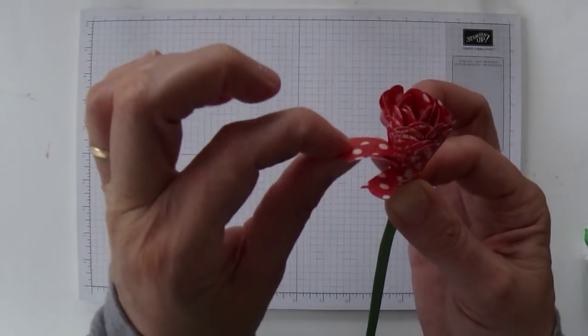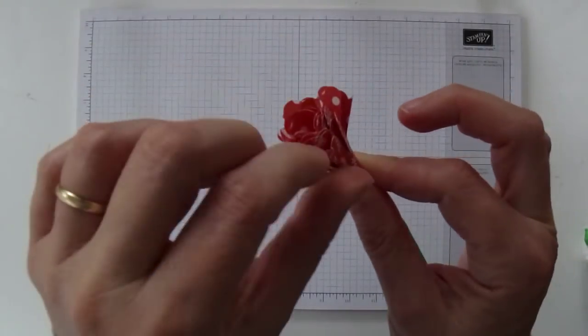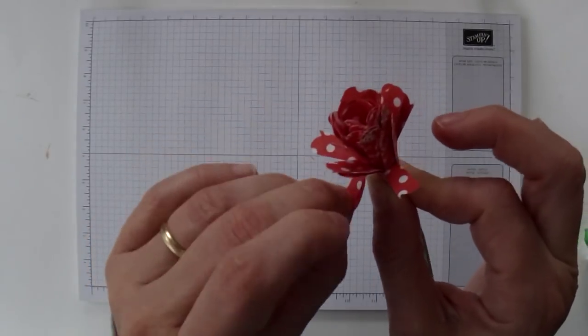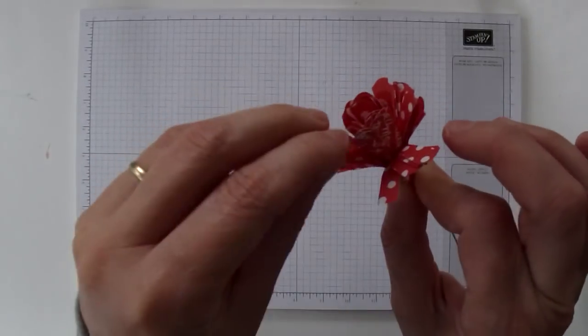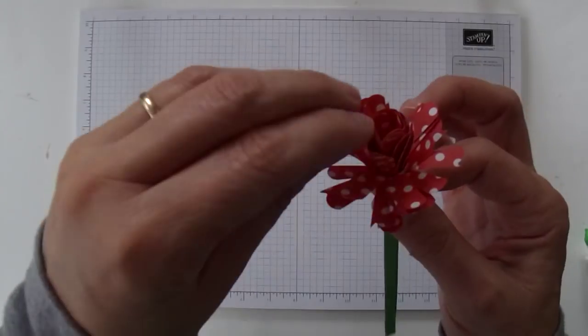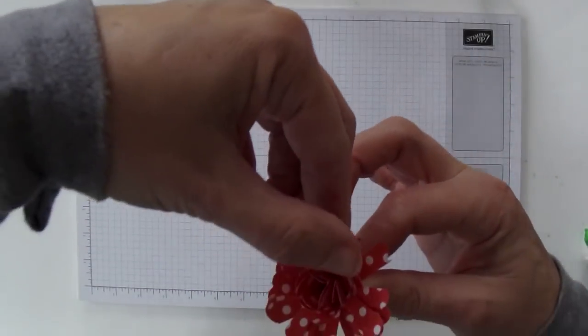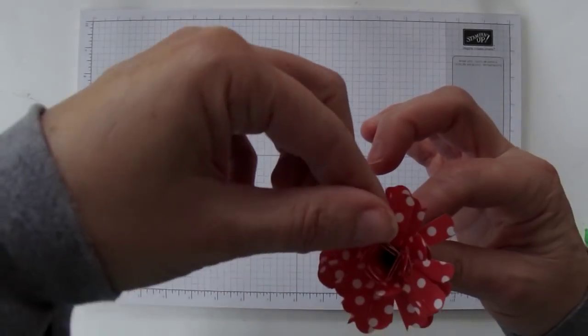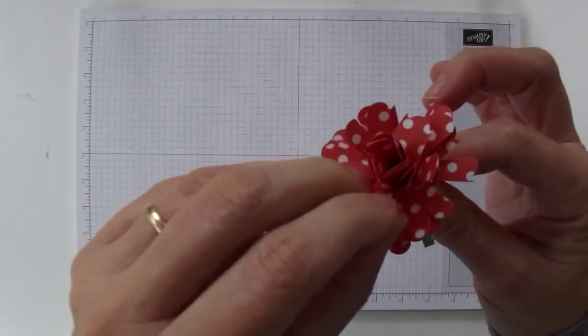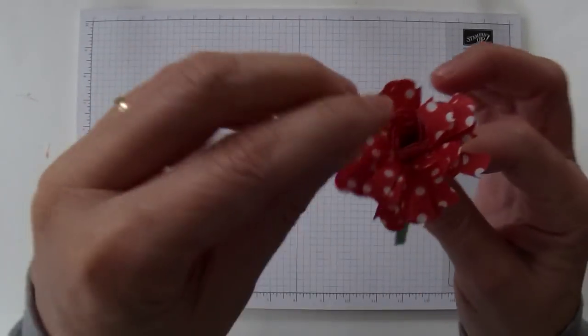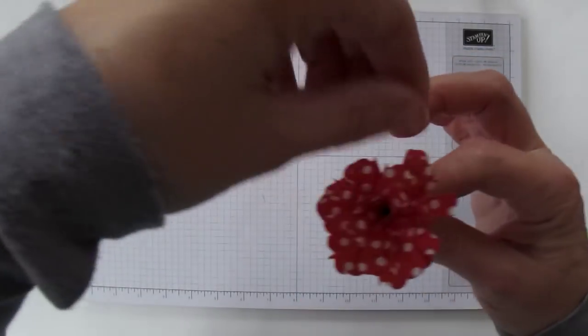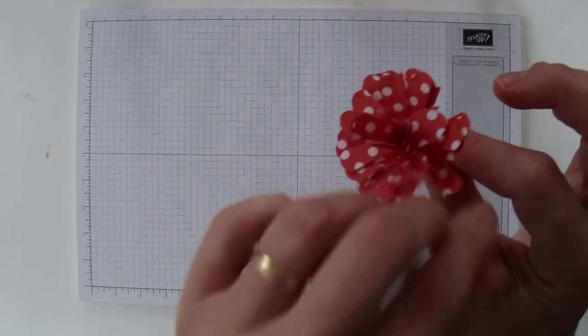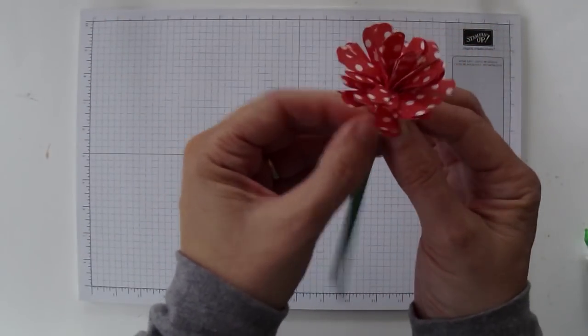And then what I'm going to do is just start bringing down my petals from the outer to the inner, just like that. Just start to open up the flower. This flower is like a whimsical flower. It's not really meant to look like any particular flower, although I do think it looks a little bit like a carnation. But it's just a happy little flower.